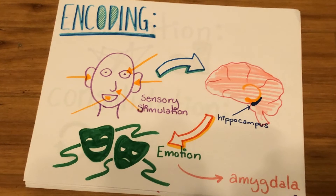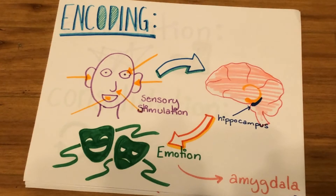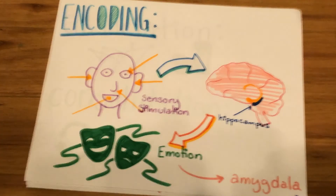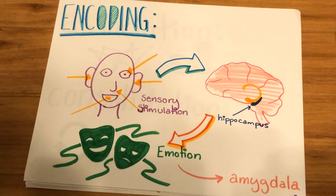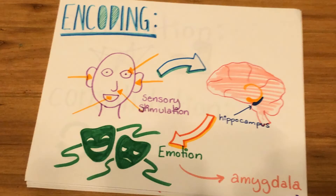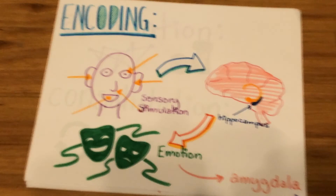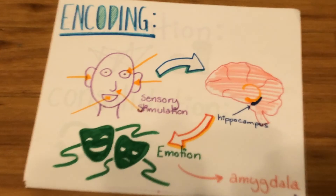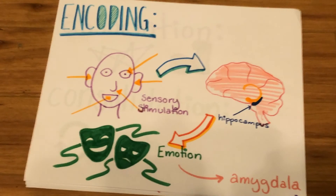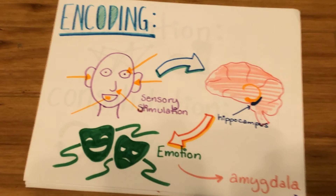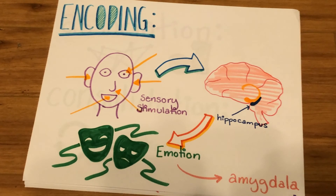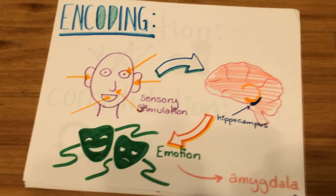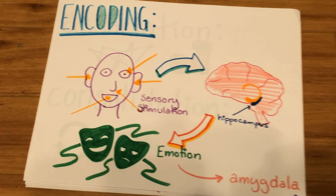Encoding happens when the senses are stimulated and those sensations are decoded in the sensory areas of the cortex, then combined in the hippocampus into a single experience. Emotion makes memories more likely to be remembered, and the amygdala is in charge of this.